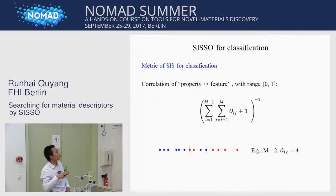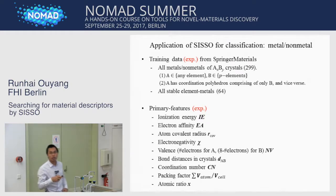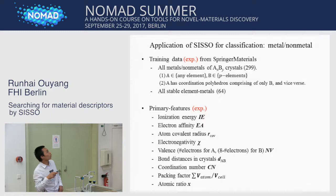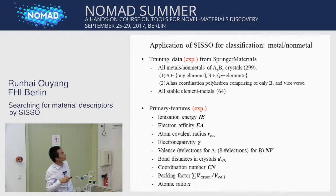For example, with two groups — blue and red — the number of overlapping data points is 4. For the application of CISO for classification of metal and non-metal, we take experimental training data from Springer Materials. We use metal and non-metal AXBY crystals, about 300 in total, where A belongs to any element and B belongs to p-block elements, with A coordination polyhedra comprising only B and vice versa. We also include stable elemental metals. The primary features are ionization energy, electron affinity, atomic covalent radius, electronegativity, valence, bond distance in crystal, coordination number, packing factor, and atomic ratio.